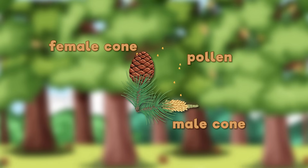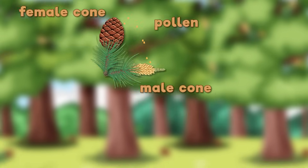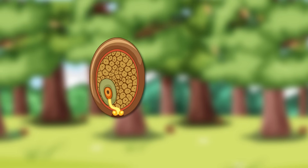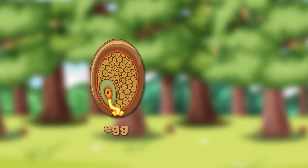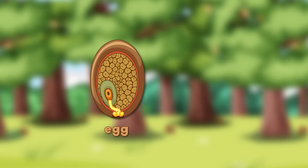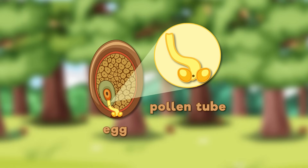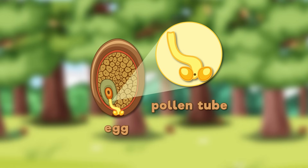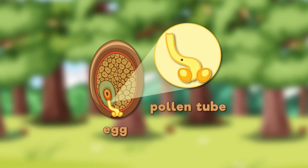Some of these pollen grains land on female cones. Once pollen reaches a female cone, it sticks to a sticky surface and forms a pollen tube. This allows the sperm to travel to the egg inside.